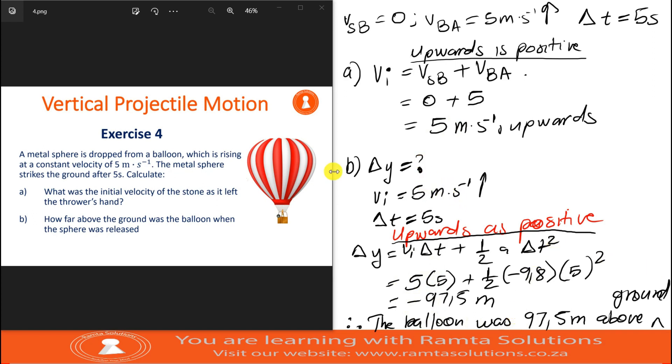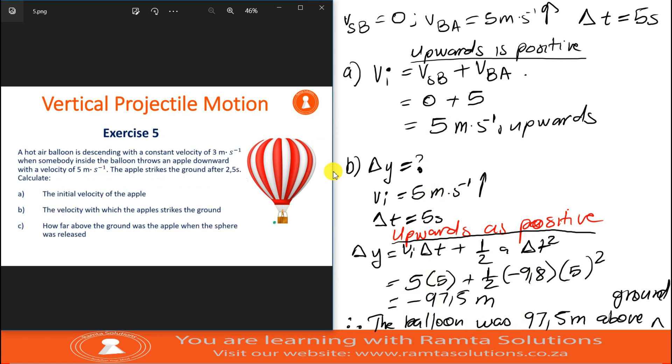Now, next time we meet, we will be looking at a case where an object that is inside the balloon was thrown at a certain velocity. The velocity will not be zero. As you can see now, we will be looking at this example. With that being said, it's a wrap. We will see you next time. Hope this was easier for you. Bye-bye.